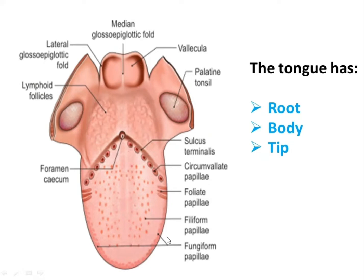At the tip of the tongue there is the fungiform papilla, then the filiform papilla, then the foliate papilla, then the circumvallate papilla right in the sulcus terminalis, then the foramen cecum. On both sides are the palatine tonsils, then the lymphoid tissue. These are the main important features.